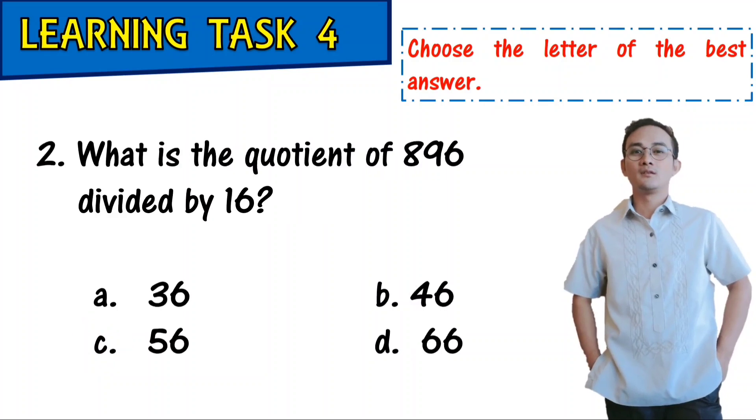What is the quotient of 896 divided by 16? A, 36. B, 46. C, 56. D, 66.